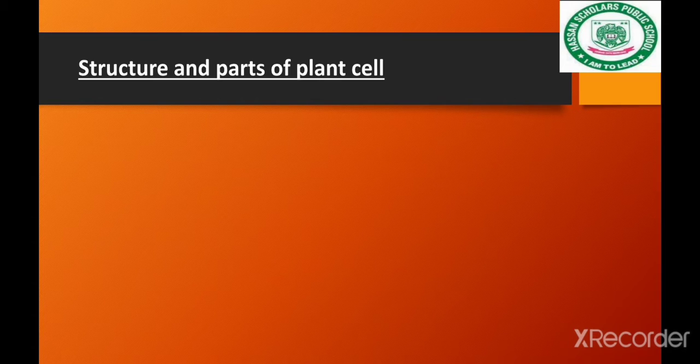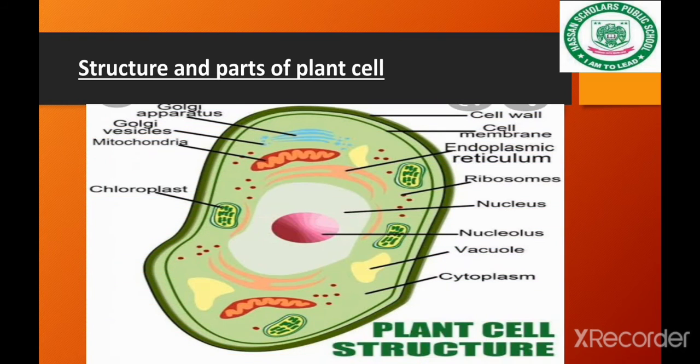We are looking at the structure of plant cells and the different parts. Here we will look at a diagram of plant cells. The plant cells have many structures, like the outermost covering, which we call the cell wall. Unlike animal cells, the plant cell has a cell membrane, but the cell wall is an additional protective layer.